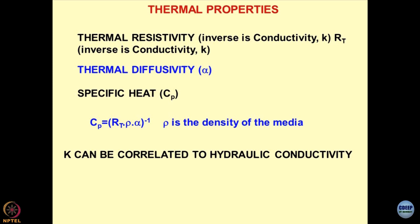There is a relationship between these parameters: thermal resistivity RT, density ρ, diffusivity α, and specific heat Cp. Cp equals RT × α × density, or inversely related. So if you know two parameters, the third can be obtained since density of the soil media can be obtained very easily. If density is known, I still have three unknowns, so I have to obtain at least two parameters to get the third.